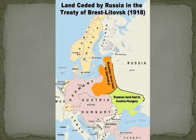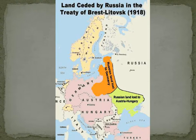This map shows the Treaty of Brest-Litovsk, which is the treaty Lenin signed with Germany and Austria-Hungary to get out of the war. Russia gave up a tremendous amount of territory — the orange land went to Germany and the green to Austria-Hungary. Lenin told the people this was fine because he believed communism was going to spread and this land would eventually become part of the huge communist state he believed was going to be created — which didn't actually come to fruition, but that's how he got support for the treaty.